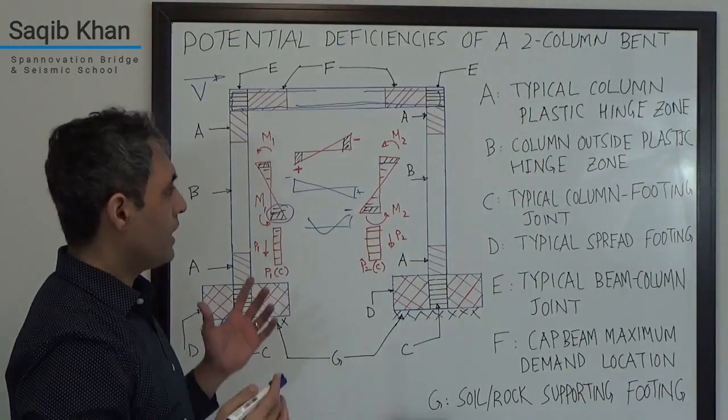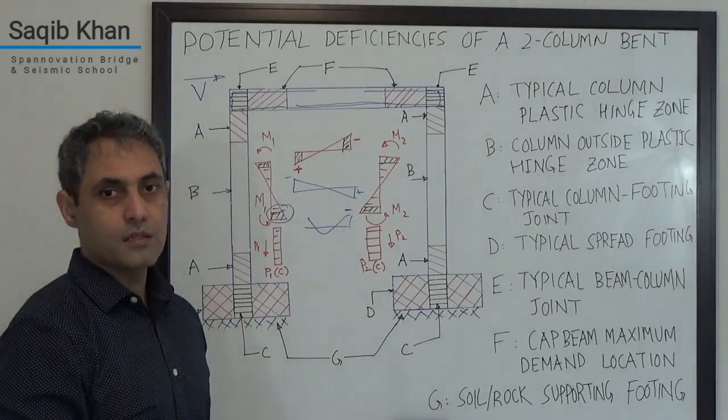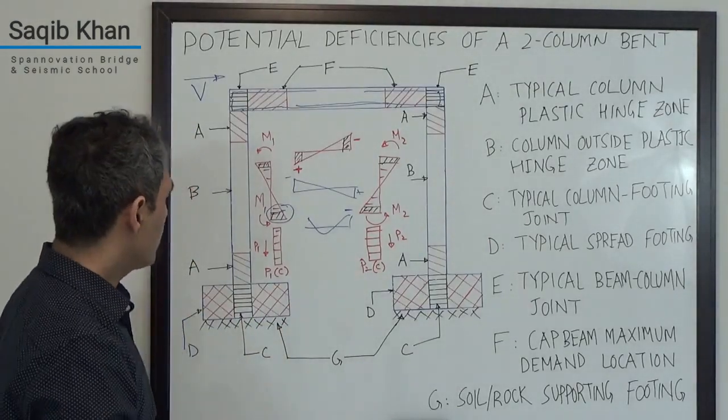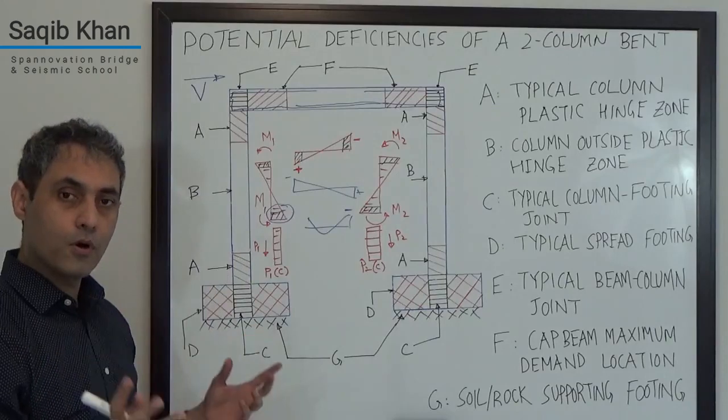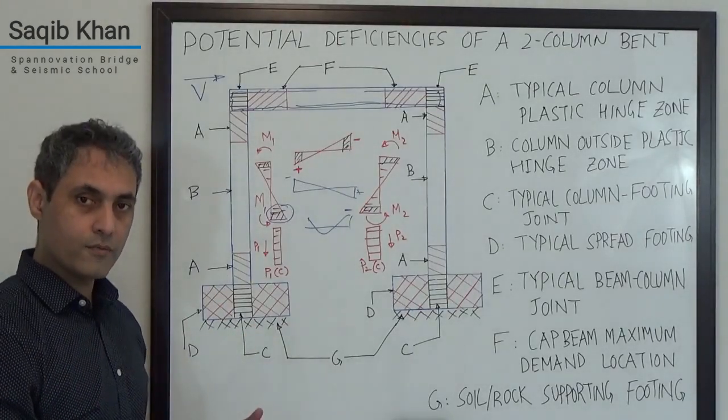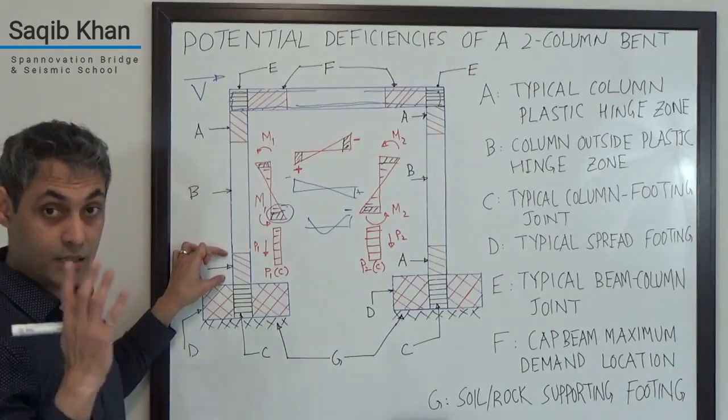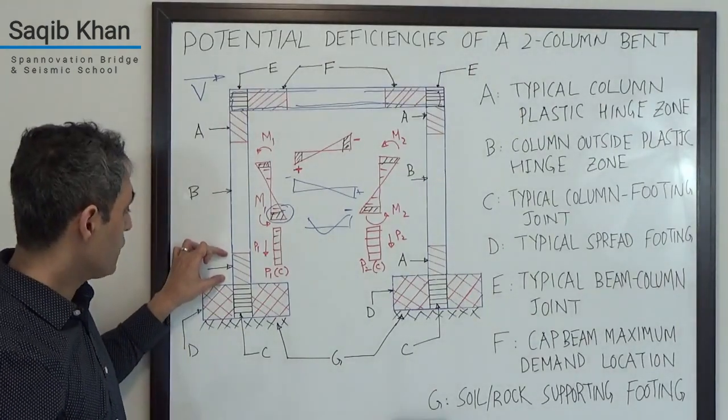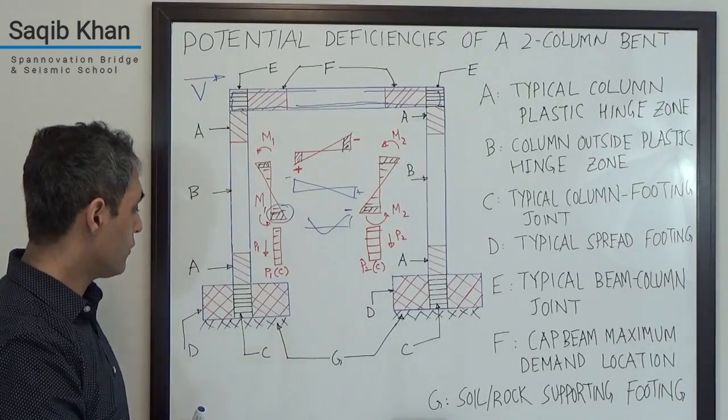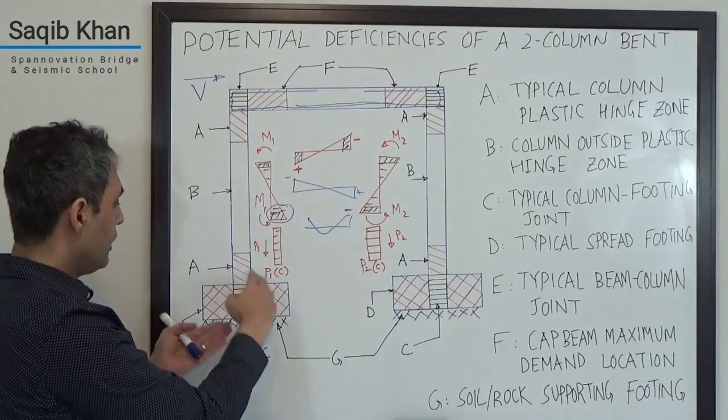So we have to be mindful of all of these things. Now just to wrap it up, what we want to make sure is that the plastic hinges have an appropriate amount of longitudinal reinforcement and that we're keeping the hinging within the desired plastic hinge zones. We want to make sure there is enough shear and confinement reinforcement.